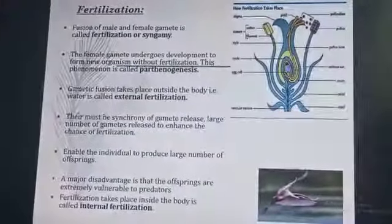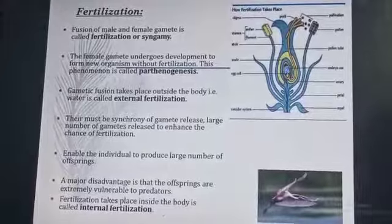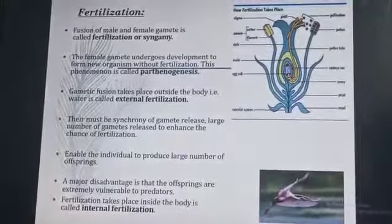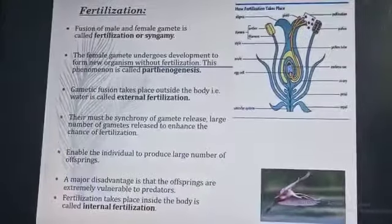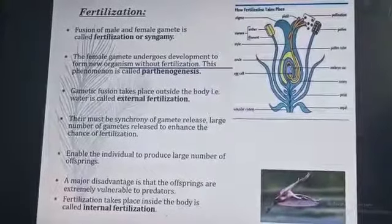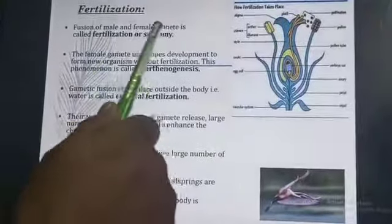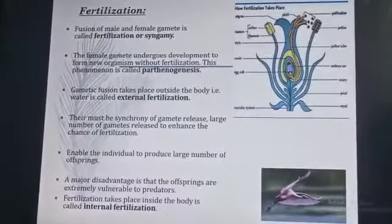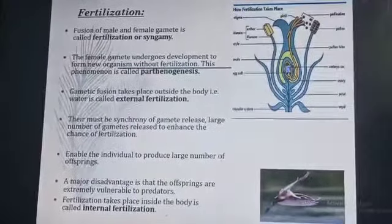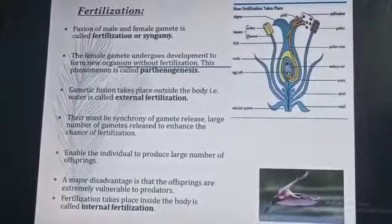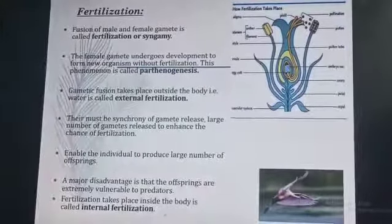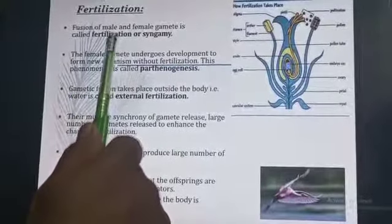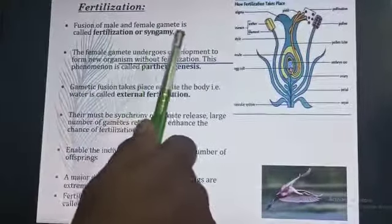This last slide covers fertilization or syngamy, which is very important — it is a question of two marks. In the case of flowering plants, when the male and female gametes fuse, the process is called fertilization or syngamy.